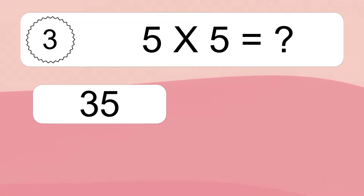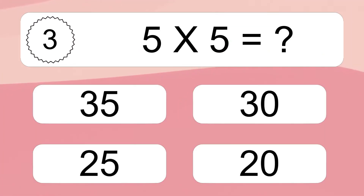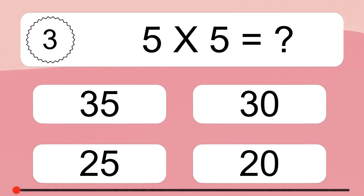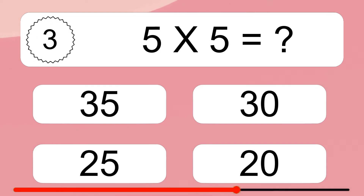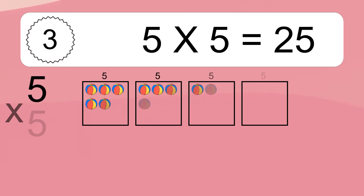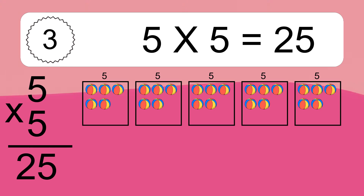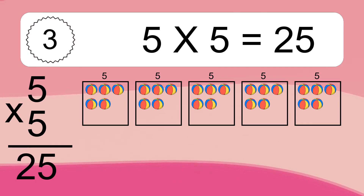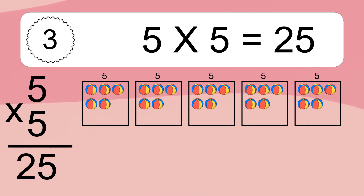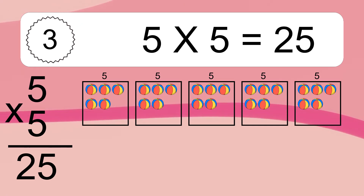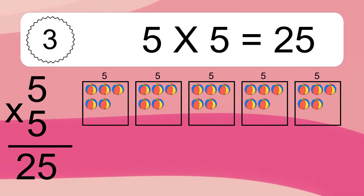5 times 5 equals what? 5 times 5 equals 25. We have 5 boxes, and each box has 5 colorful balls inside. If you count all the balls in all the boxes together, you will have 5 times 5 balls. This equals 25 balls.